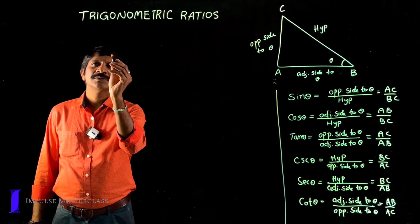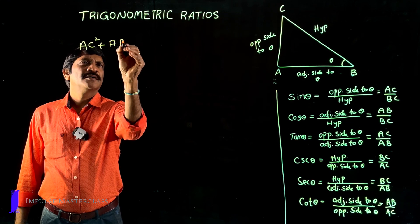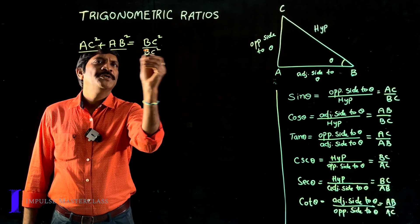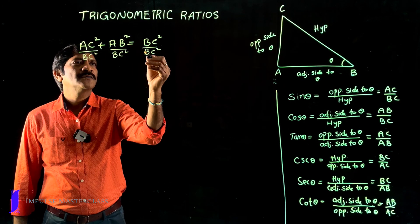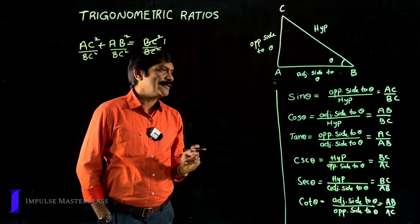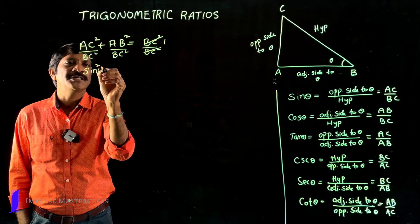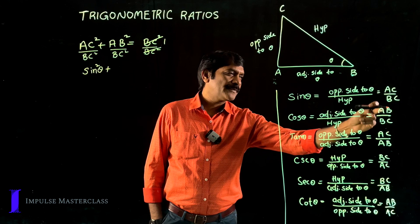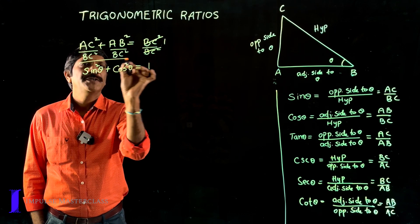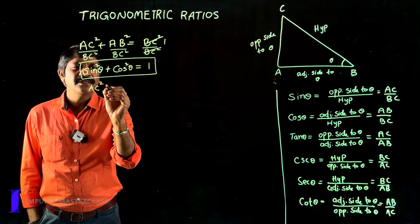Now let us understand the relationships among trigonometric ratios. By Pythagoras theorem, one side squared plus the other side squared equals hypotenuse squared. Dividing both sides by BC², BC²/BC² cancels to give 1 on one side. We observe that AC/BC is sin θ, so we get sin²θ, and AB/BC is cos θ, so we get cos²θ. Thus we establish the relation: sin²θ + cos²θ = 1.